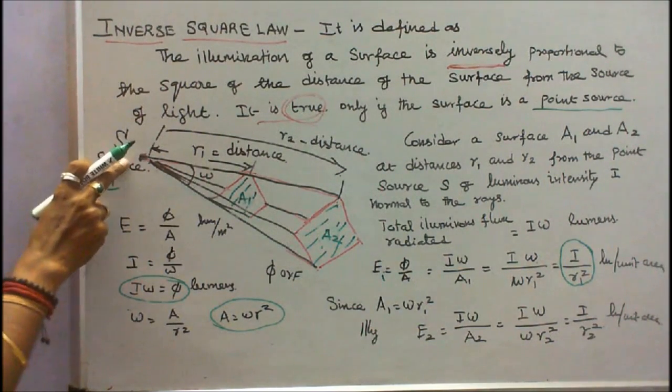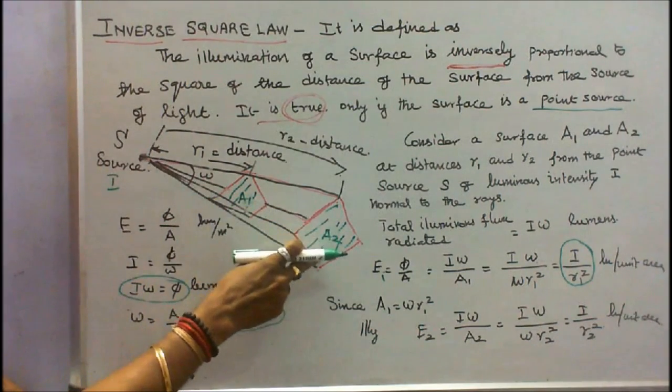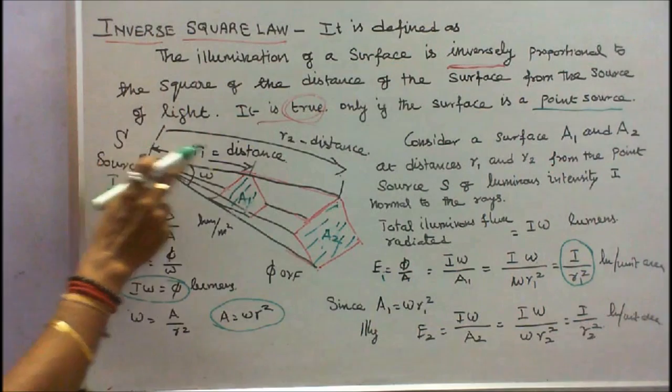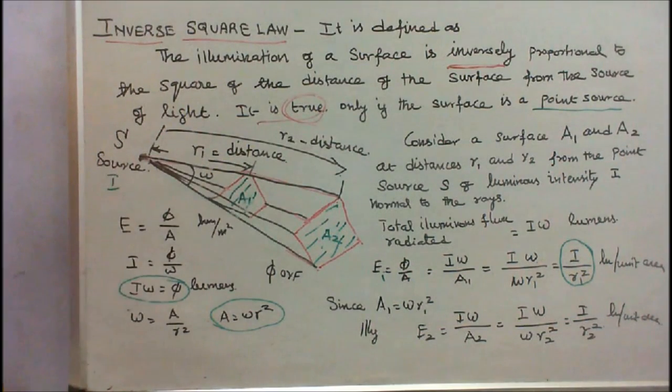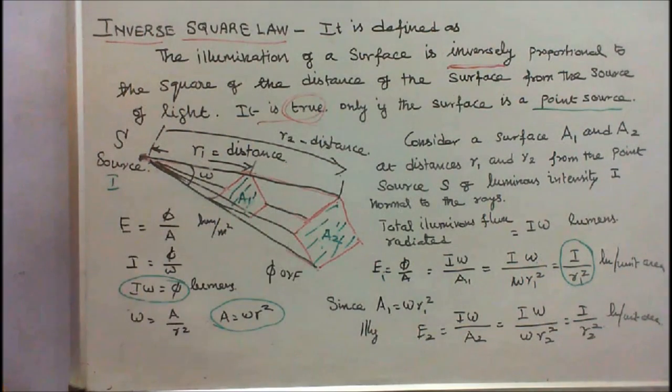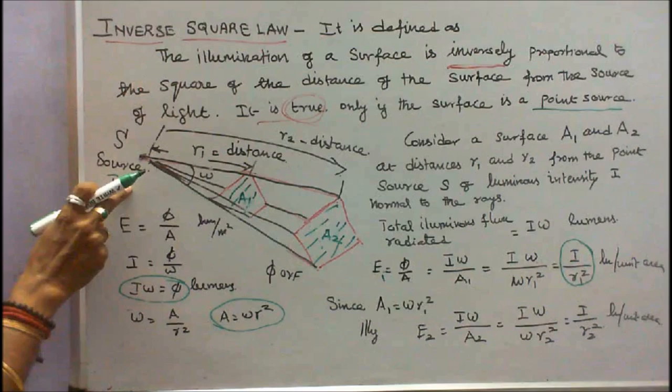This is a source. Consider a surface A1 and A2 at a distance R1 and R2 from the point of source S of luminous intensity I.